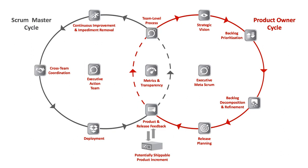Purpose of the Scrum at Scale Guide: Scrum, as originally outlined in the Scrum Guide, is a framework for developing, delivering, and sustaining complex products by a single team. Since its inception, its usage has extended to the creation of products, processes, services, and systems that require the efforts of multiple teams. Scrum at Scale was created to efficiently coordinate this new ecosystem of teams in a way that optimizes the overall strategy of the organization, achieving this through a minimum viable bureaucracy via a scale-free architecture.